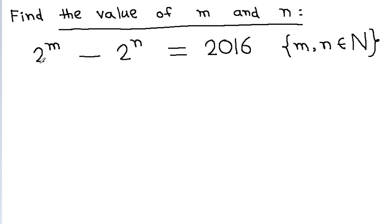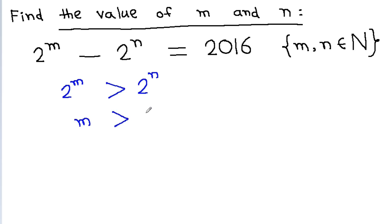Here, 2 to the power m minus 2 to the power n is a positive number, so 2 to the power m must be greater than 2 to the power n, which means m must be greater than n. From here we can relate m and n by adding a constant k, so we get m is equal to n plus k.